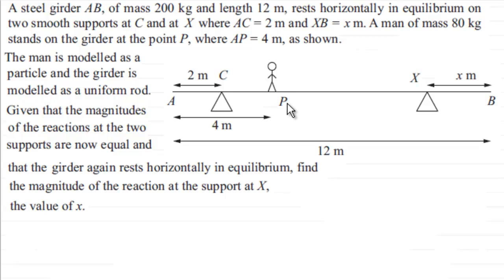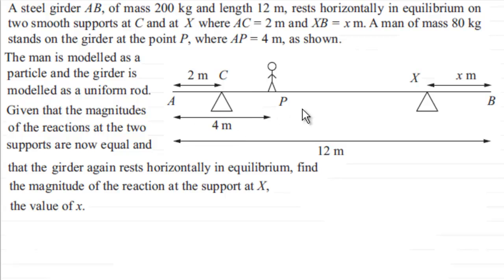A man of mass 80 kilograms stands on the girder at point P where AP is 4 meters. We model the man as a particle and the girder as a uniform rod. Given that the magnitudes of the reactions at the two supports are equal and the girder rests horizontally in equilibrium, we need to find the magnitude of the reaction at support X and also find the value of X.